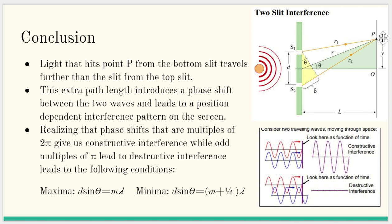Light that hits point P from the bottom slit travels further than from the top slit. This extra path length introduces a phase shift between the two waves and leads to a position-dependent interference pattern on the screen. Realizing that phase shifts that are multiples of 2 pi give constructive interference while odd multiples of pi lead to destructive interference. Our maxima is D times sine of theta equals M times lambda, and our minima is D times sine of theta equals M plus one-half times lambda. The minima is the destructive interference and the maxima corresponds to the constructive interference.